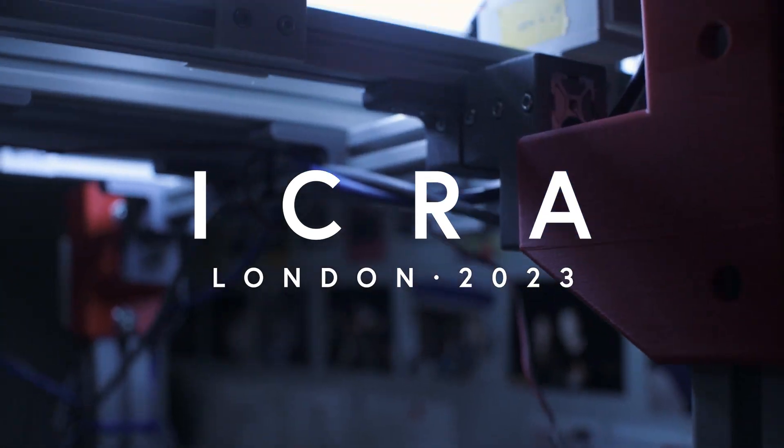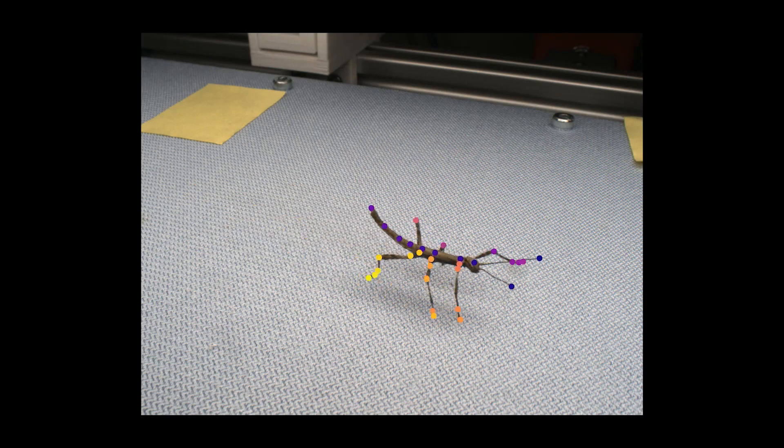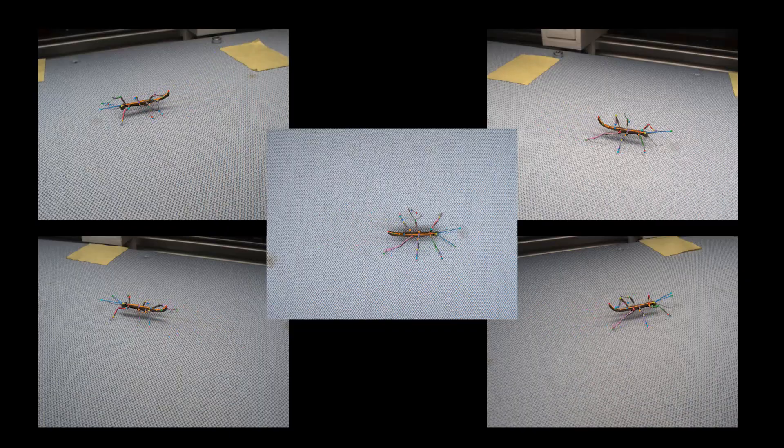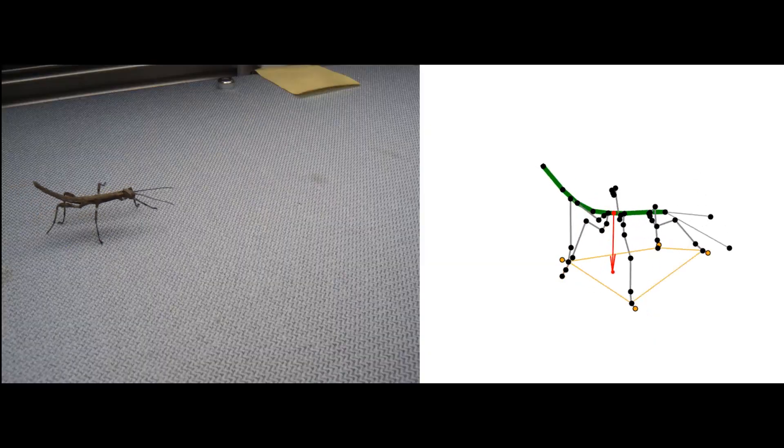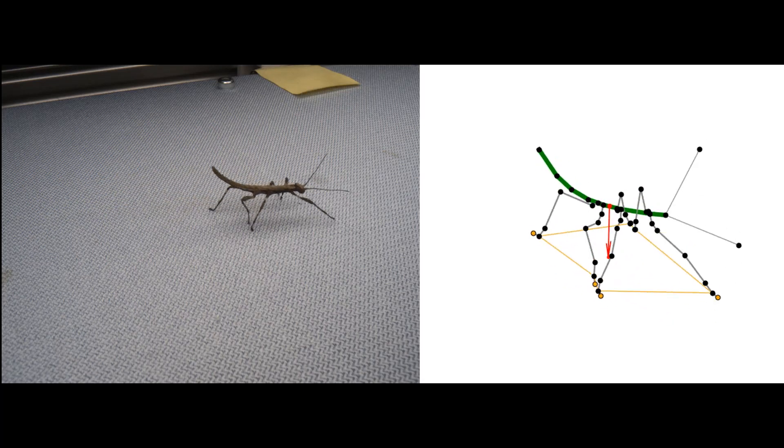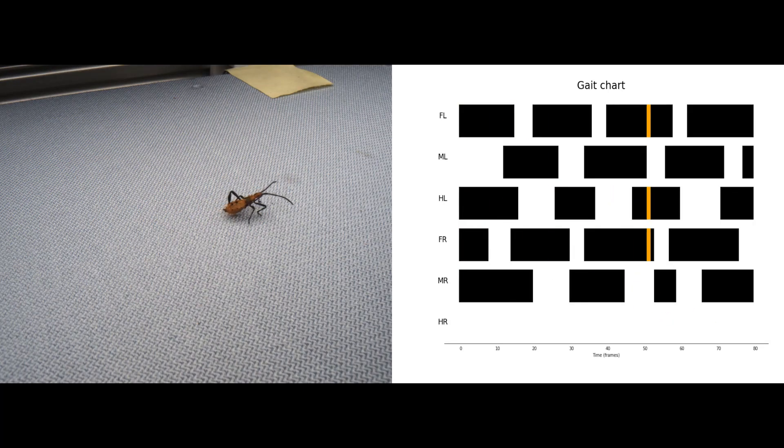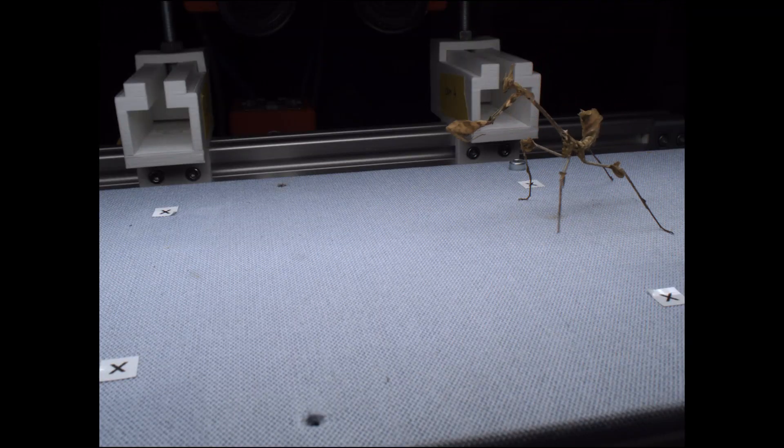To uncover the mechanical principles of hexapod locomotion, we record insects as they walk through a camera array and track points of interest using markerless pose estimation. Later, we reconstruct the tracked points in 3D to analyze the kinematics and gait characteristics of insects during different modes of terrestrial locomotion.